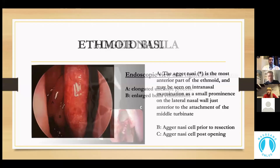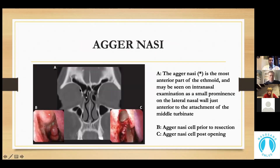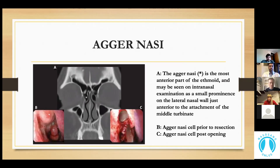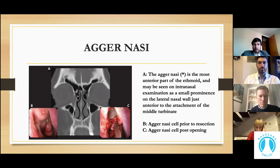The agger nasi cells are the most anterior part of the ethmoid and may be seen on intranasal examination as a small prominence on the lateral nasal wall, just anterior to the attachment of the middle turbinate. They are thought to be the most superior remnant of the first ethmoid turbinal — the nasoturbinal — and have a variable degree of pneumatization. Here you can see the agger nasi before and after opening of the agger nasi cells.